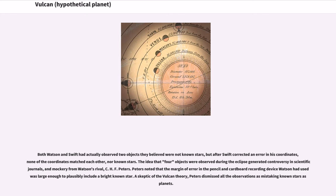The idea that four objects were observed during the eclipse generated controversy in scientific journals, and mockery from Watson's rival, C.H.F. Peters. Peters noted that the margin of error in the pencil and cardboard recording device Watson had used was large enough to plausibly include a bright known star. A skeptic of the Vulcan theory, Peters dismissed all the observations as mistaking known stars as planets.